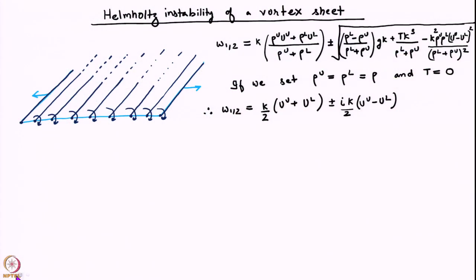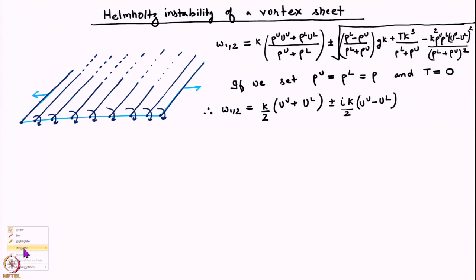We now go on using the same dispersion relation. We will look at an even simpler model, which is the Helmholtz instability of a vortex sheet. I have put here the full dispersion relation once again and now we are going to do a number of simplifications.